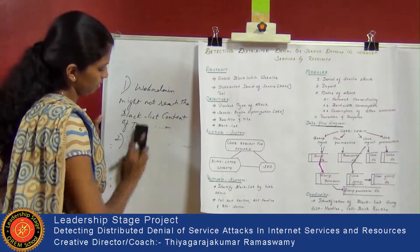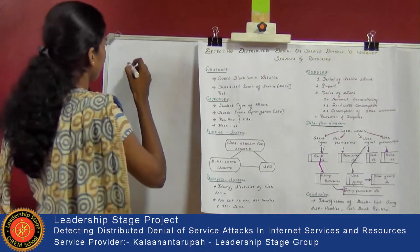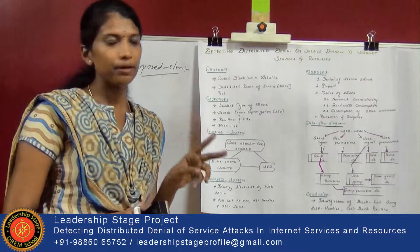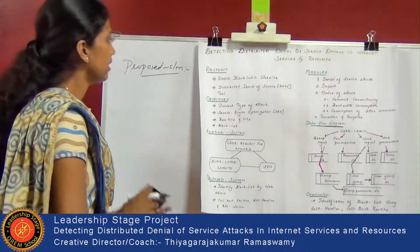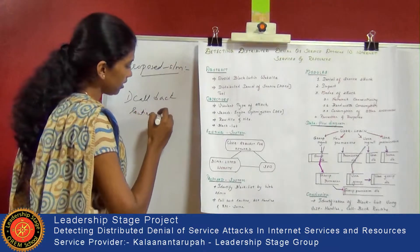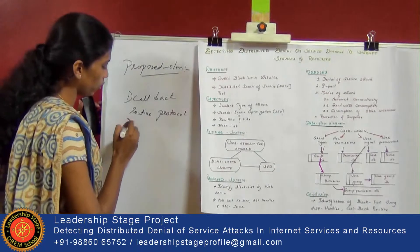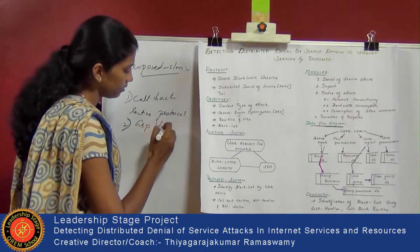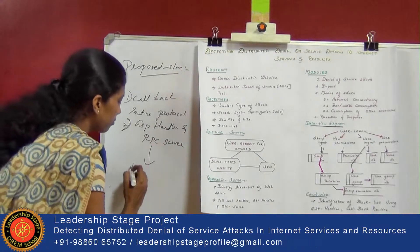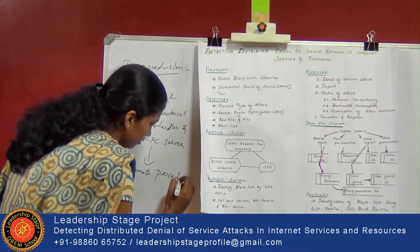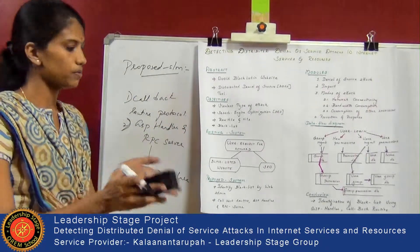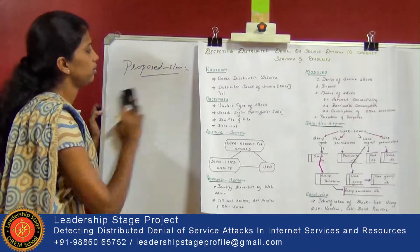Next, we are going to see about the proposed system. In the proposed system, there are two tools implemented in the DDoS, that is the denial of service. The first one is the callback routing protocol — a protocol is nothing but a set of instructions. The second one is about the GSP handler and RPC server. RPC server is nothing but remote procedure call. These two tools are involved in preventing the blacklisted content of the website, so the user can reach the required resources.